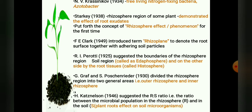In 1925, R. E. Perotti suggested the boundaries of the rhizosphere region and showed that it was bounded on one side by the general soil region, called the edaphosphere, and on the other side by the root tissues, called the histosphere.